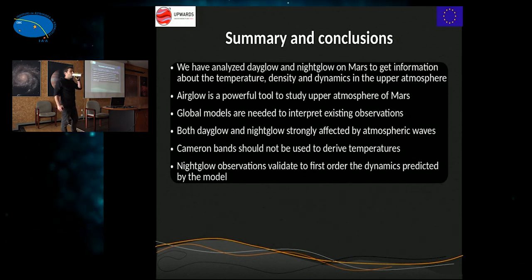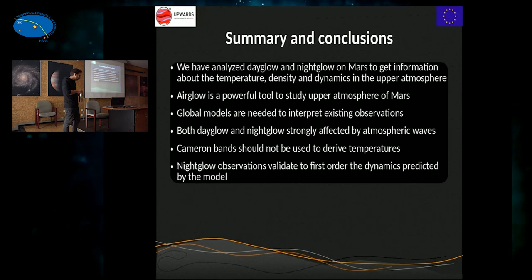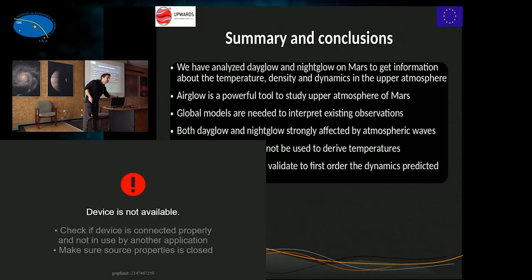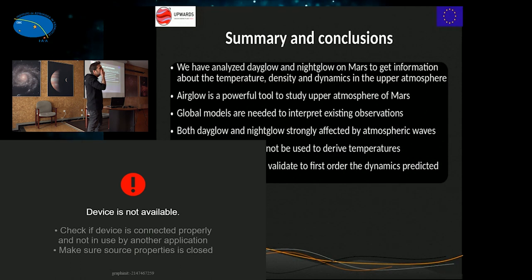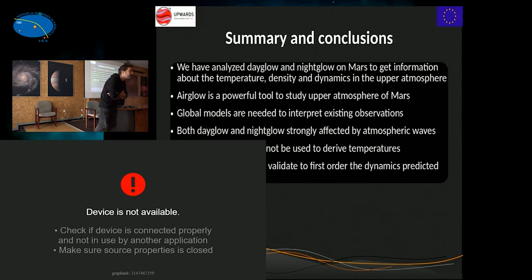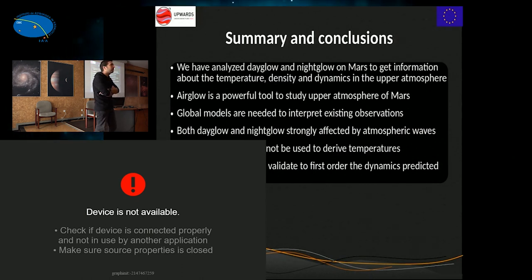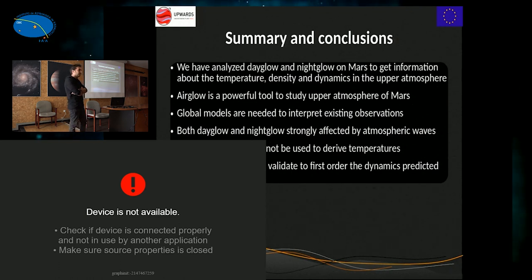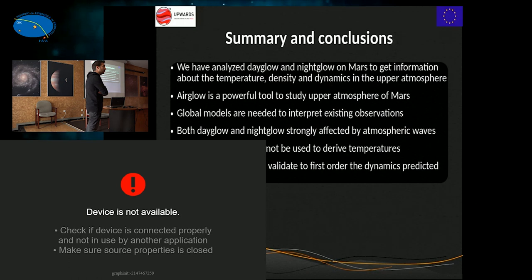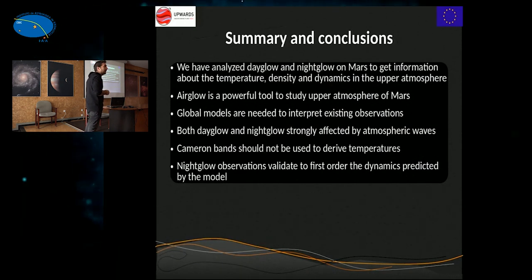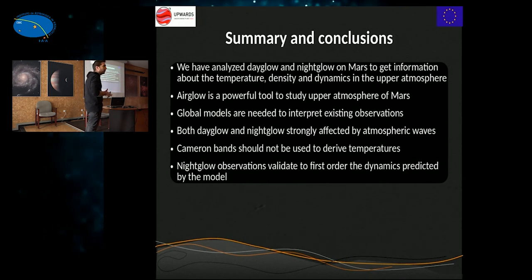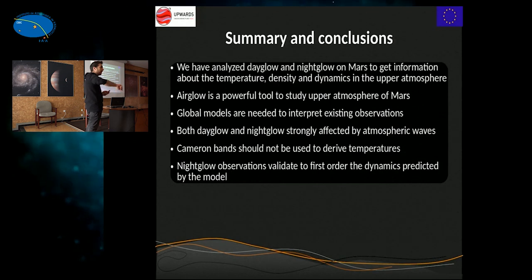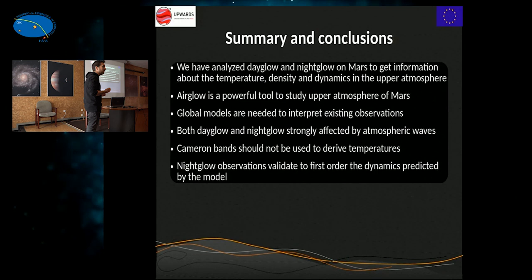Thank you, Francisco, for this nice work. Question: You mentioned the nitric oxide — that you transport the nitrogen atoms from the day side to the night side. How long does this process take, and are they not affected by any other combination? The nominal loss of nitrogen atoms in the atmosphere of Mars — this process is quite fast. I made a simulation starting with nitrogen everywhere on the planet, and just one day later the model had already created the emission in the winter pole. So that transport is really a very fast process.